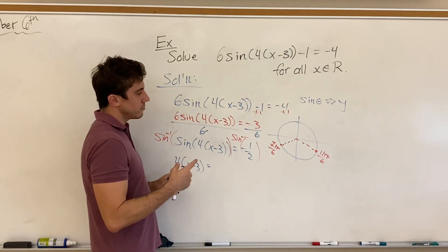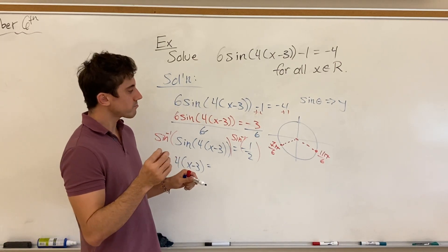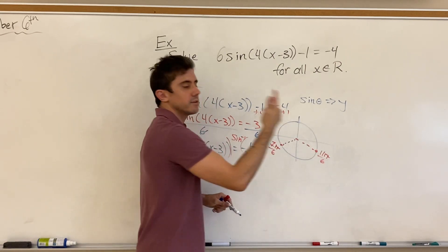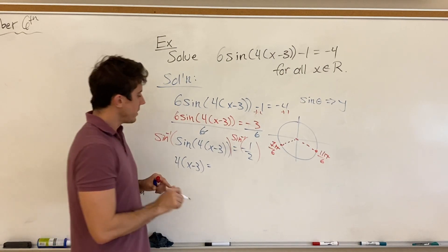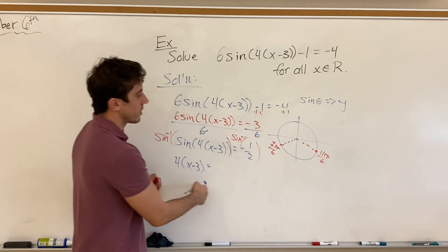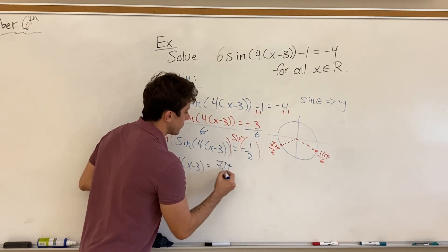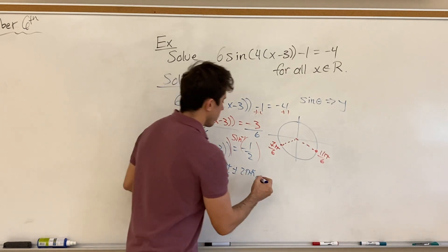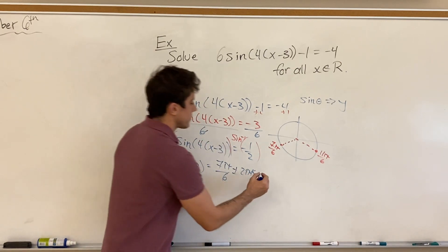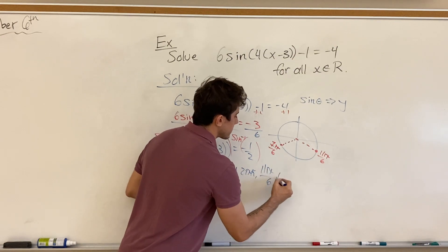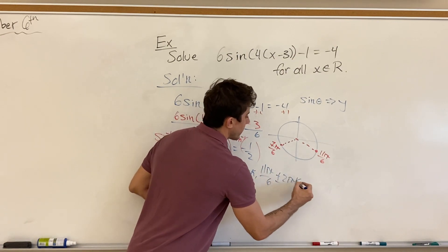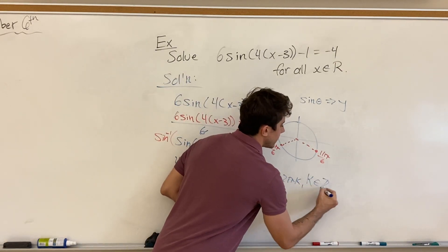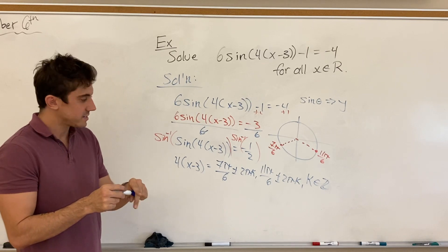So we can also agree that these values are not unique, but we can also catch them after any integer multiple of entire revolutions around our unit circle. And so what we need to write for our solutions is 7 pi over 6 plus or minus 2 pi k, or we can also have 11 pi over 6 plus or minus 2 pi k, where in both instances our k can be any element of the set of integers.